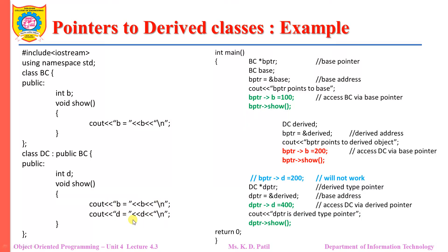Now let us see the example of pointers to derived classes. Here I have a base class which has a member integer B and void show. This is the data member and show is the member function which is going to display the value of B on the screen.